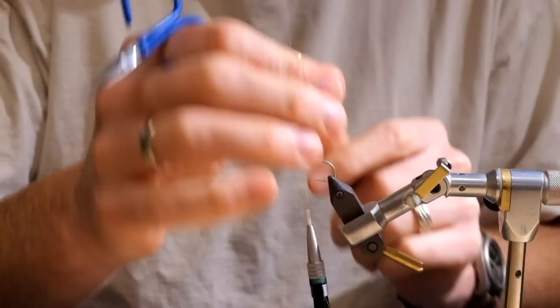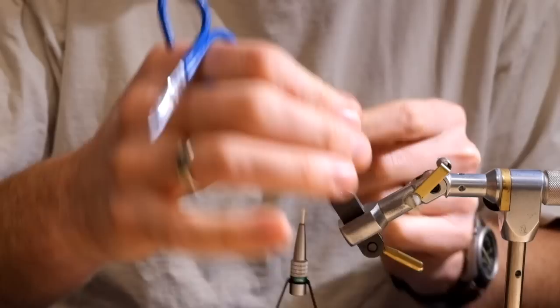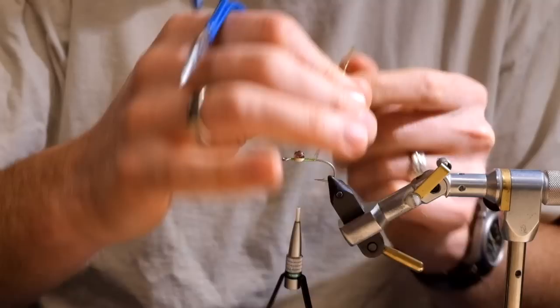And I'm gonna simultaneously wrap those four strands, Mirage Flashaboo, back. We're gonna wrap back to just a little behind the hook point.